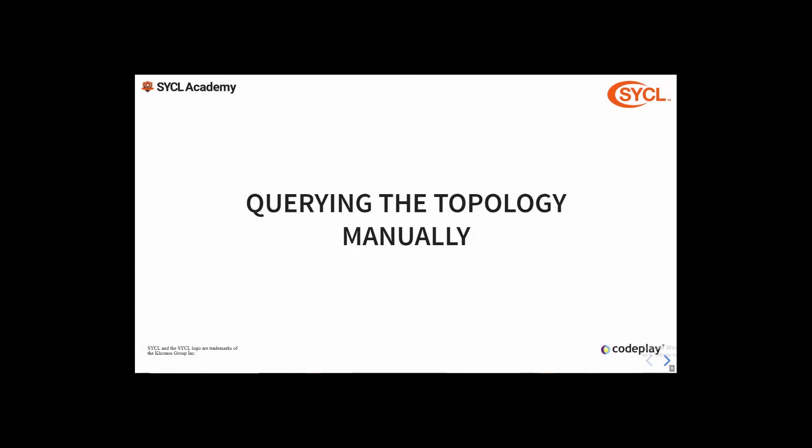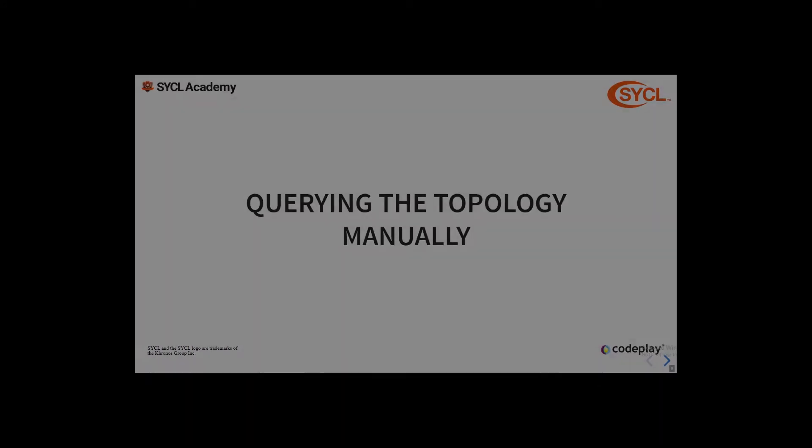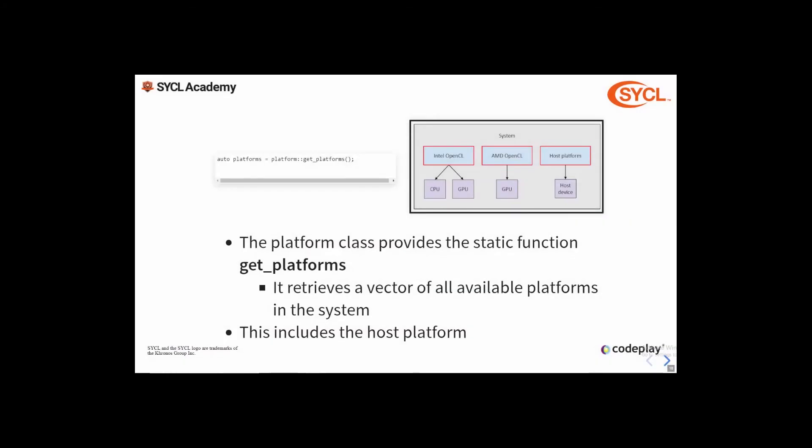First we're going to look at how you would manually traverse the topology. The platform class provides a static member function called get_platforms which returns a vector of all the platforms available in the system, including the host platform. So in this example where we have two OpenCL platforms and a host platform, get_platforms would return all three of these.